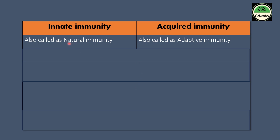The first difference: innate immunity is called natural immunity, while acquired immunity is called adaptive immunity. In innate immunity, our body has a natural immune power. In acquired immunity, it is adaptive — if you are exposed to pathogens, your body will develop immune power.